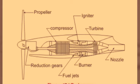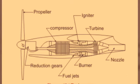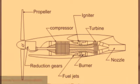When air enters into the engine it gets compressed in the compressor. After that, the compressed air enters into the combustion chamber section where fuel is mixed with the pressurized air and burned with the help of an igniter.